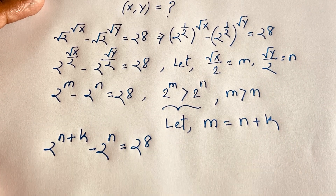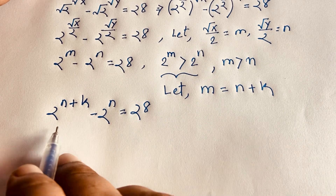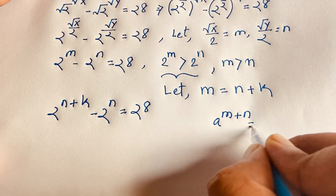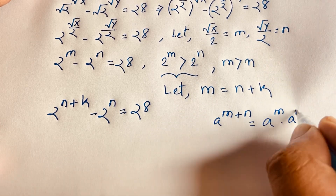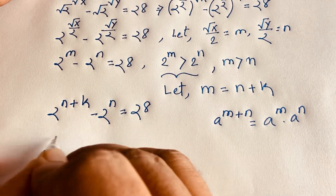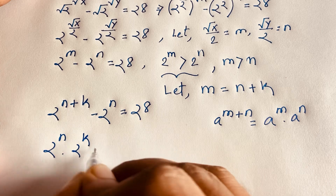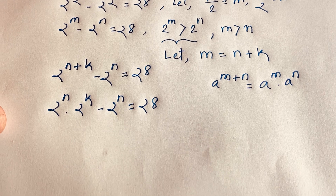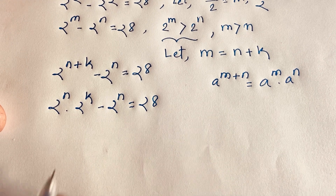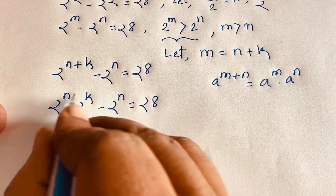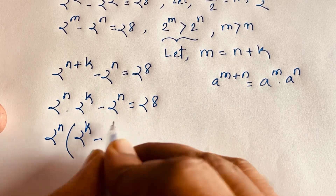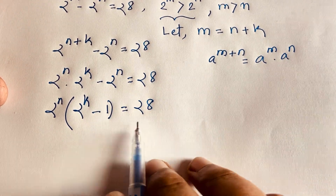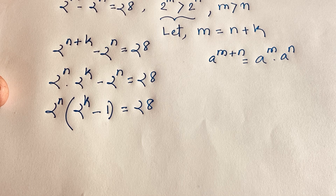Using the exponential law — a^(m+n) = a^m × a^n — we rewrite 2^(n+k) as 2^n × 2^k. So the equation becomes 2^n × 2^k minus 2^n equals 28. Factoring out 2^n gives 2^n × (2^k − 1) = 28.